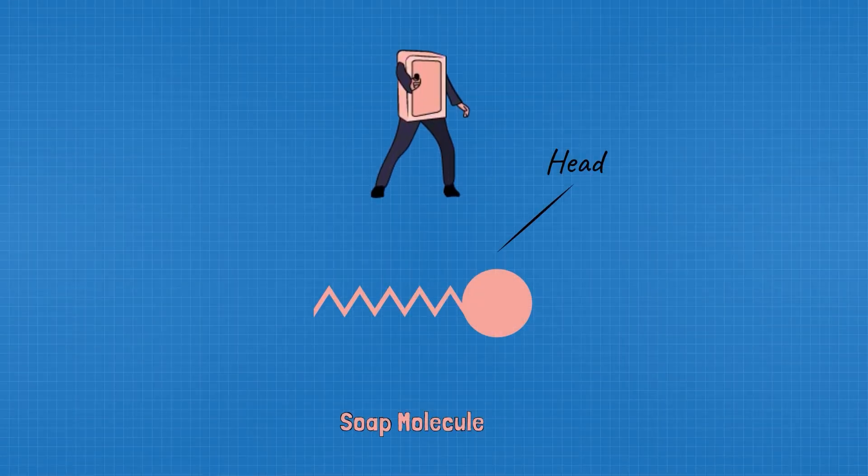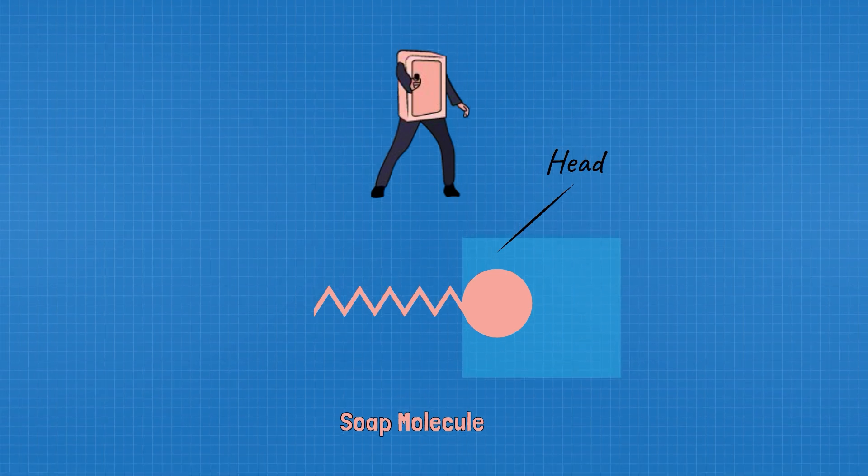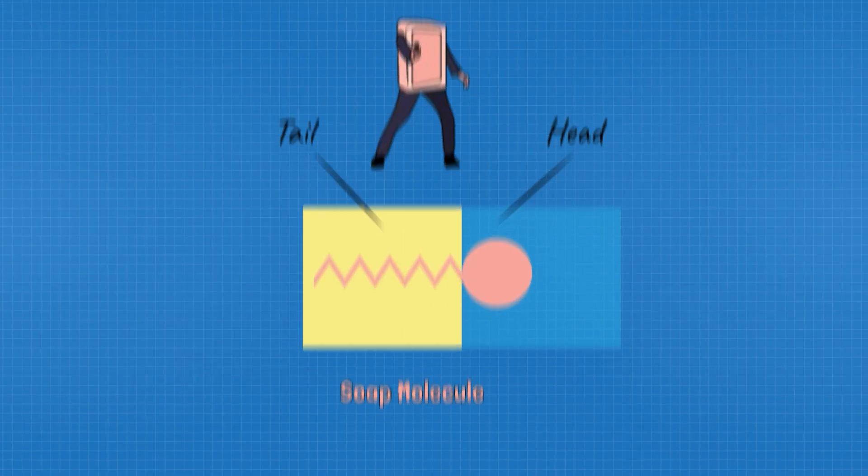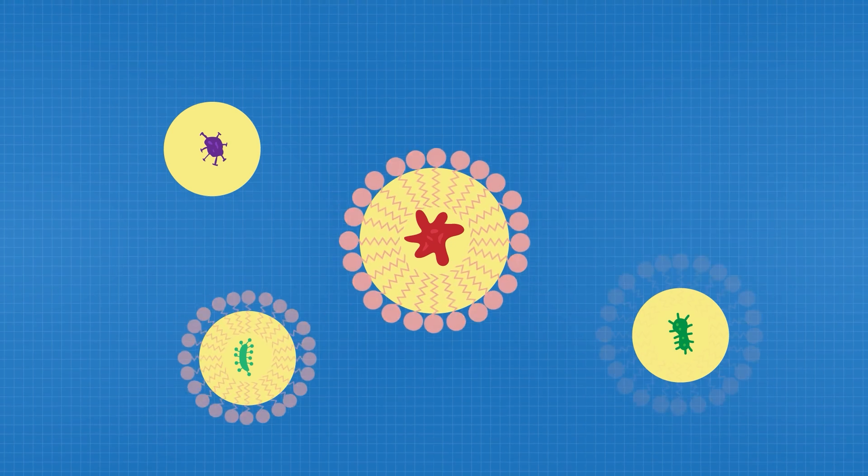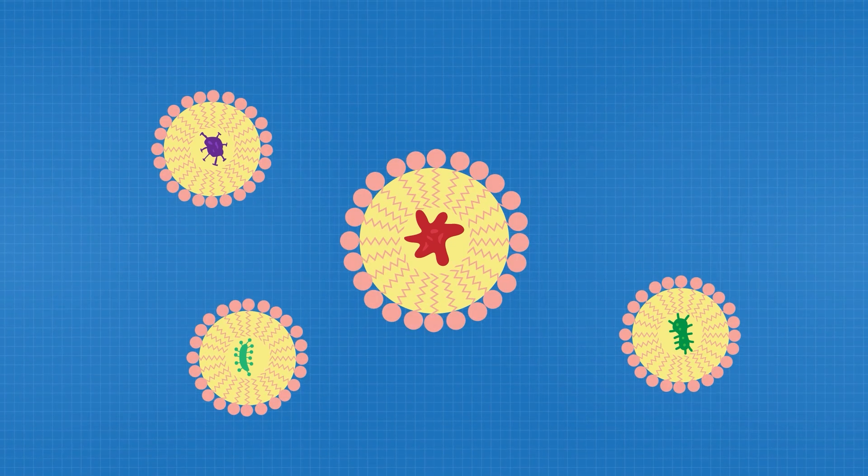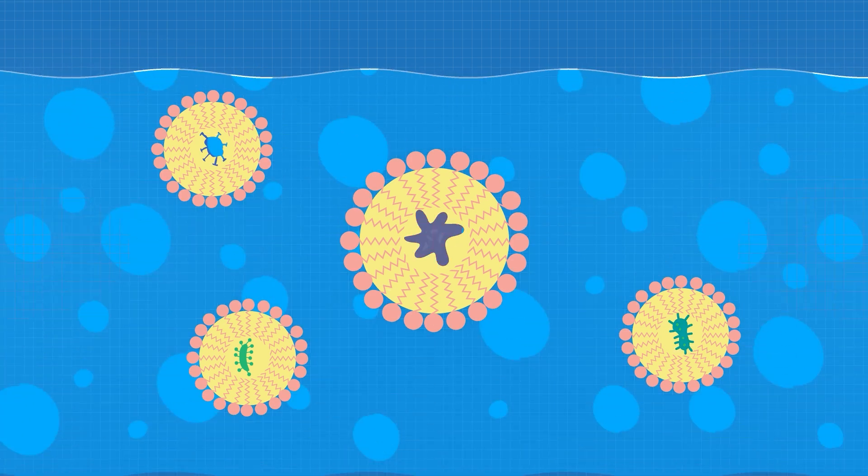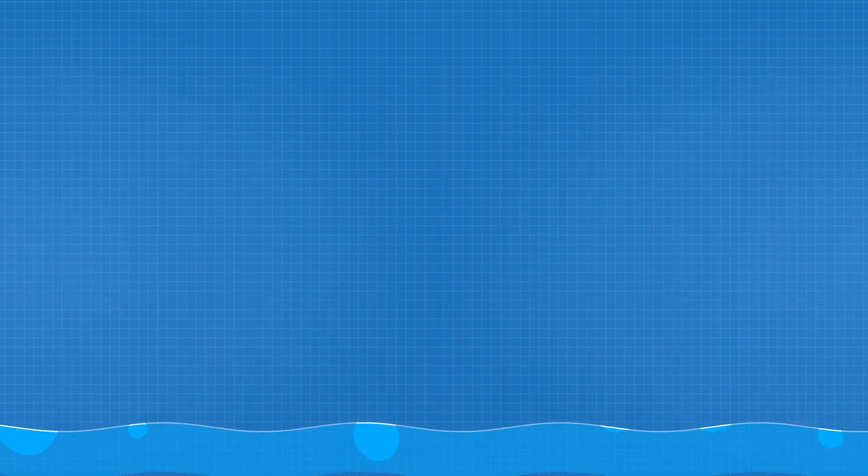How soap actually works. Soap is like a double agent. One side, the head, loves water, hydrophilic. The other side, the tail, loves oil and dirt, hydrophobic. When you lather up, these molecules surround the grime and form micelles, tiny bubbles that trap all the nasty stuff. Now instead of water just skimming past the dirt, soap wraps it up, and water washes it all away.